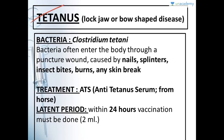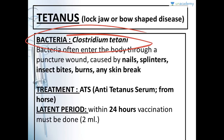Tetanus is also called lock jaw or bow-shaped disease. In tetanus, the jaw becomes very tight and the patient is not able to open the jaw even to eat food — someone else is required to open the jaw and drop food into the patient's mouth. It's called bow-shaped disease because the body becomes so stiff that when the person lies on the bed, the spinal cord portion appears raised and the body develops an arc or bow shape. The bacteria responsible is Clostridium tetani.